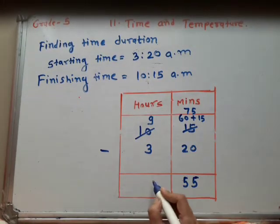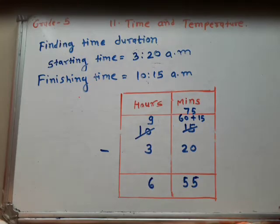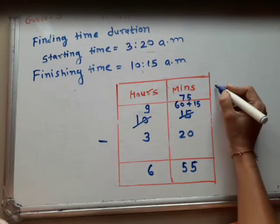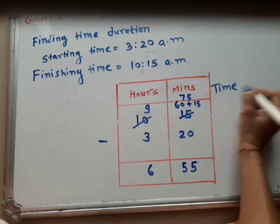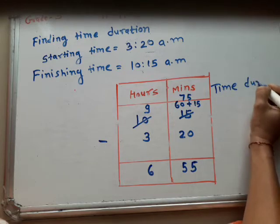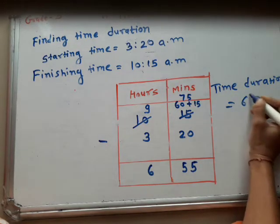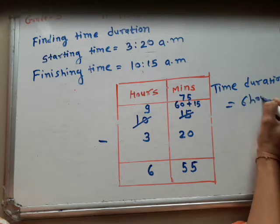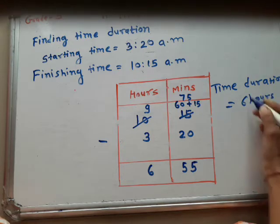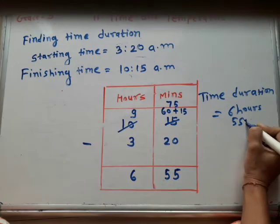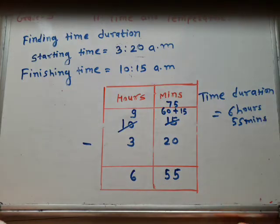And 9 minus 3 gives us 6. So the time duration is equal to 6 hours 55 minutes. This is your answer.